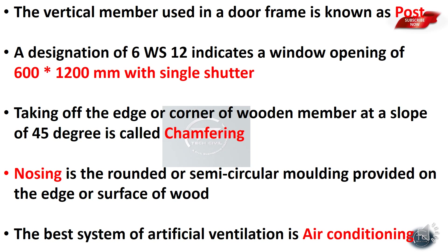For a double shutter, T is used in the designation. So a double-opening window would be denoted with T for double shutter in the designation format.